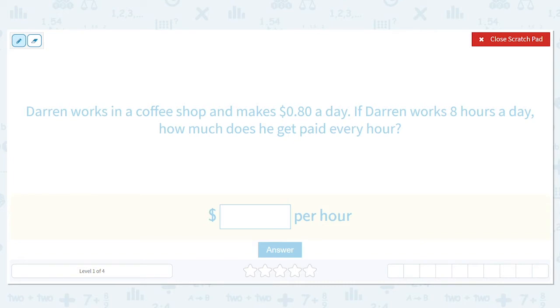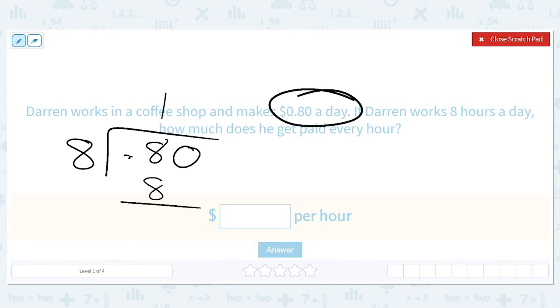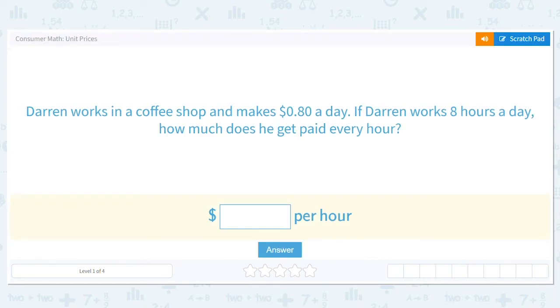Darren works in a coffee shop and makes 80 cents a day. I wish, oh no, that's not a good salary at all. If Darren works 8 hours a day, how much does he get paid every hour? Well, that's 80 cents a day divided by 8 hours, and we'd end up with 10 cents. So he gets paid 10 cents an hour if he works 8 hours and gets 80 cents for the whole day. So I'll do 0.10 cents.